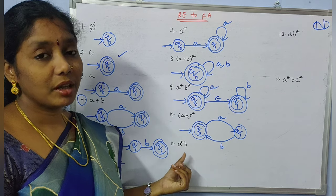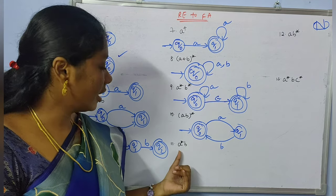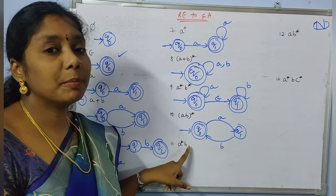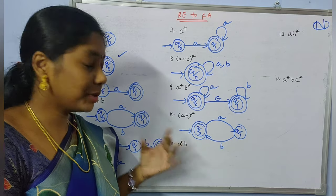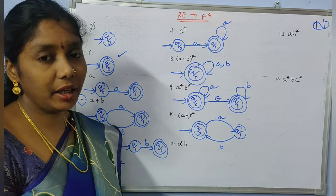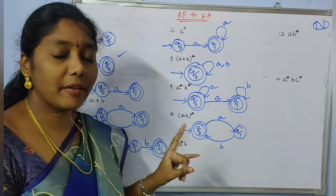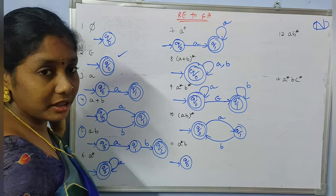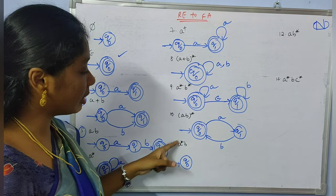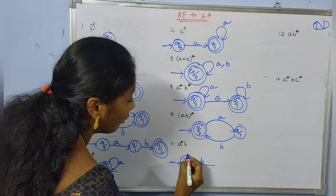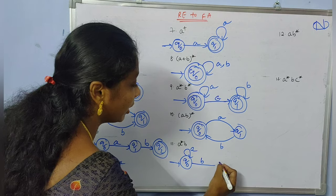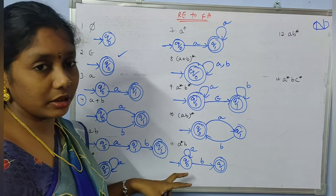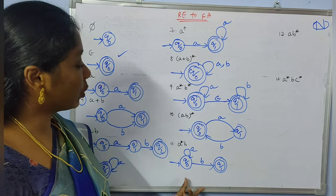Coming to example 11, 'a*b'. You may have many 'a's or no 'a's, but after all 'a's there must be exactly one 'b' to reach the final state. The minimal string is 'b' itself. So the initial state is not the final state. You can take a self-loop on 'a' in q0, then transition to the final state with 'b'. This is the equivalent finite automata for 'a*b'.